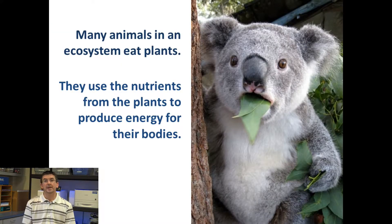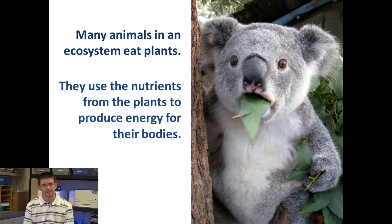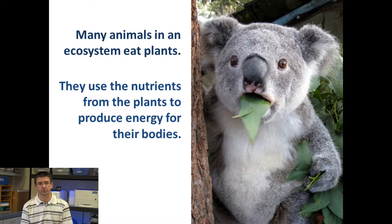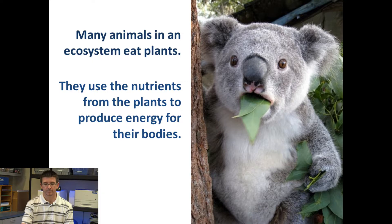In an ecosystem there are many types of animals that are plant eaters, so as they eat the plants they get the energy that these plants have produced from sunlight and use it to provide energy for their bodies.